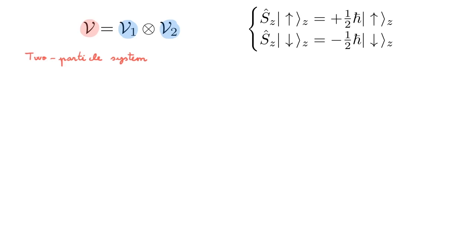Let's start with a single particle and to make the example even simpler we're going to limit our discussion to the spin degree of freedom of a spin 1 half particle, for example an electron.